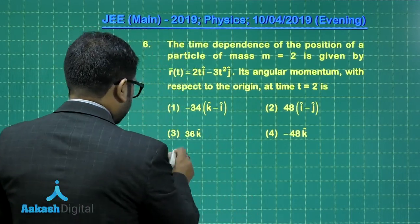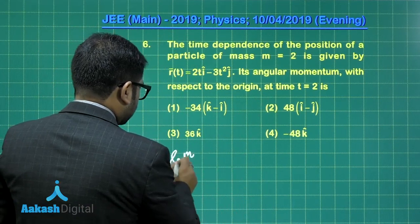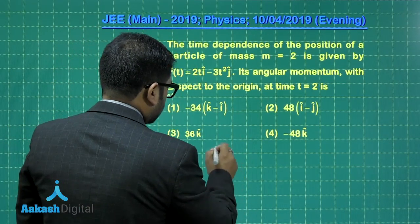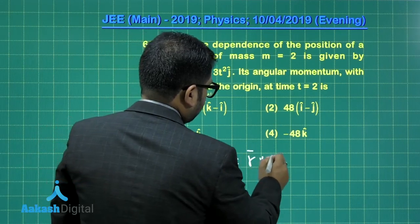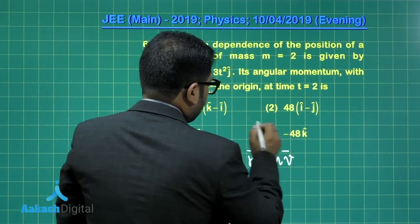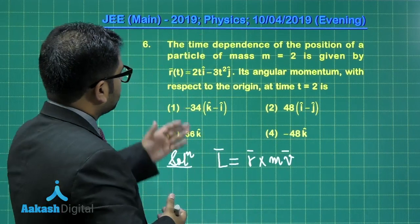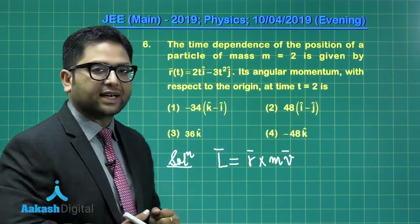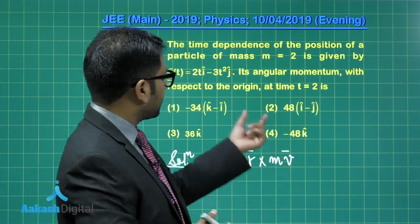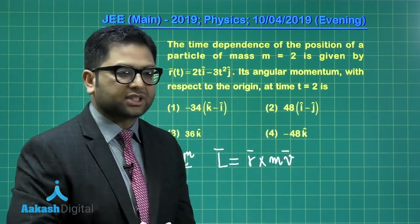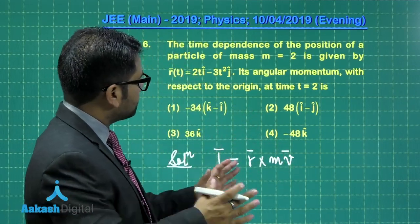As I said, this is a very preliminary level and this is certainly going to help boost the confidence of students. That's r cross mv. Velocity is of course the derivative of the position vector here. This is straightforward, the velocity can be calculated by derivative of the position vector.